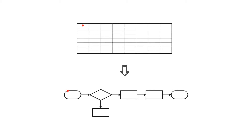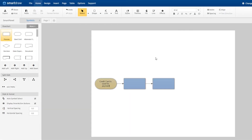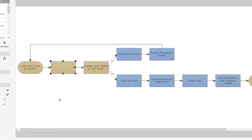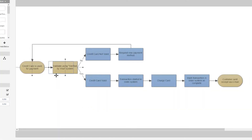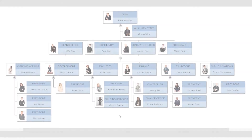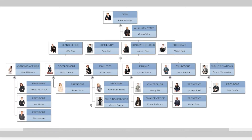Other APIs, like Visio for example, require you to specify the coordinates of every shape and line in the diagram. This makes generating a diagram with code tedious and complex. The SmartDraw API is very different because it leverages SmartDraw's intelligent formatting engine — the ability to automatically format and connect shapes on a page based on their relationships.